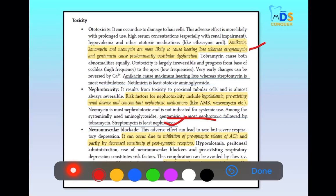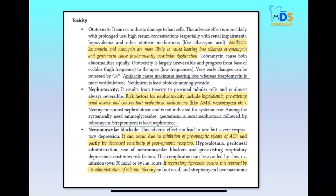For nephrotoxicity, gentamicin is the most nephrotoxic among aminoglycosides, whereas streptomycin is the least nephrotoxic. Remember: which aminoglycoside is most nephrotoxic — gentamicin; most ototoxic — amikacin; most vestibulotoxic — streptomycin. Neuromuscular blockade occurs because aminoglycosides inhibit presynaptic release of acetylcholine and decrease the sensitivity of postsynaptic receptors.